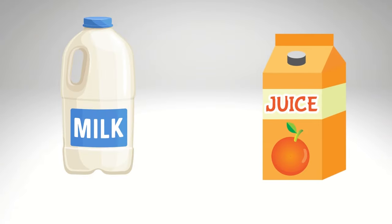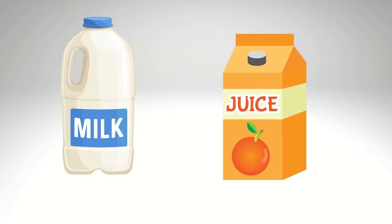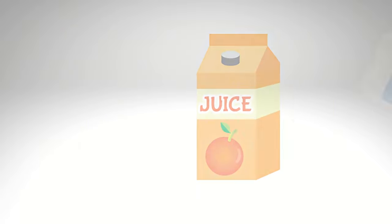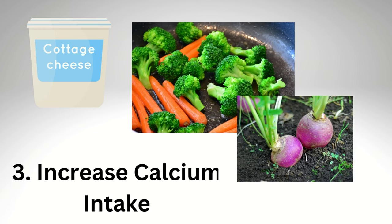Third, increase calcium intake. For example, you can drink milk or calcium-fortified orange juice, or eat foods such as cottage cheese, cooked spinach, turnip greens, collard greens, and cooked broccoli.